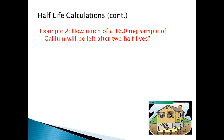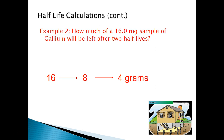How much of a 16-milligram sample of gallium will be left after two half-lives? The problem tells us directly there are 2 half-life cycles. After one half-life: 8 milligrams remain. After two half-lives: 4 milligrams remain. That's really easy to solve once you know what you're looking at.